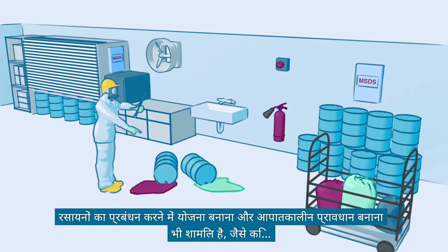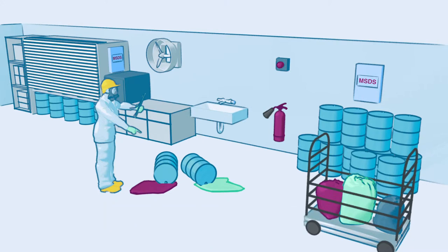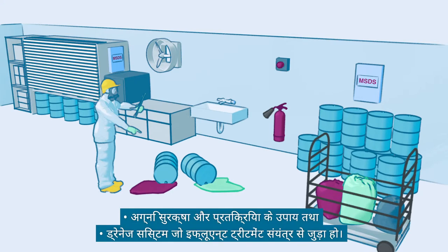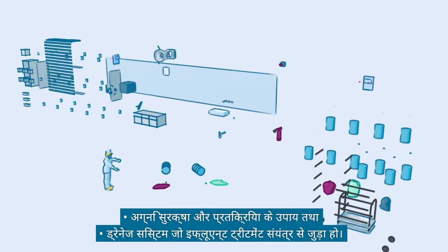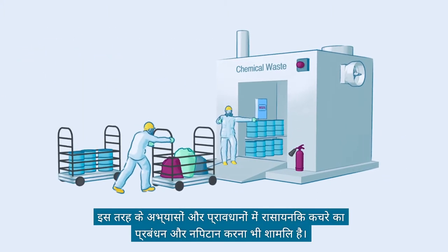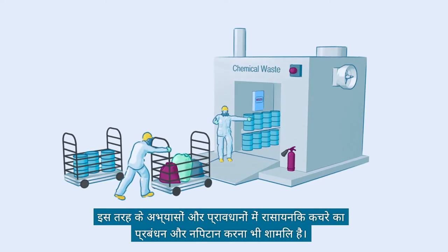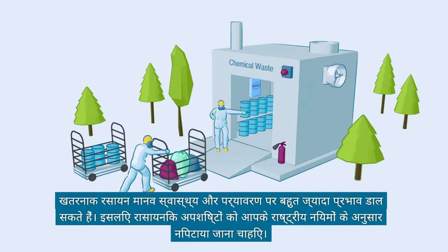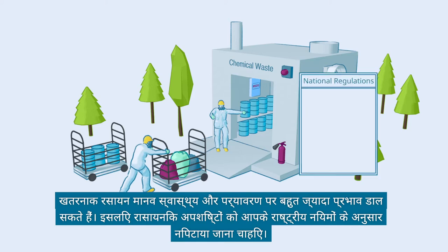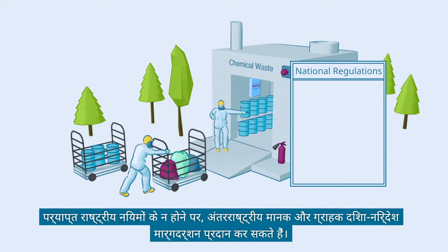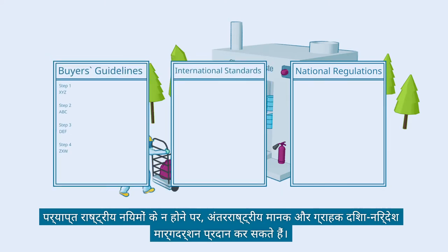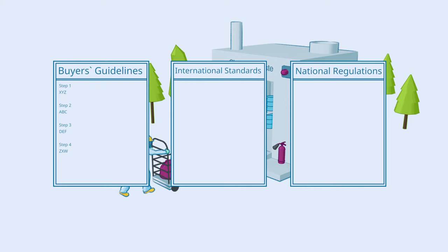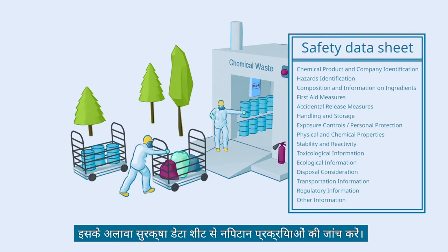Chemicals management also involves planning and making emergency provisions, such as spillage and leak control facilities, fire protection and response measures, and a drainage system connected to the effluent treatment plant. Such practices and provisions also include those for the management and disposal of chemical waste. Hazardous chemicals can have a significant impact on human health and the environment. Therefore, chemical waste needs to be disposed of according to your national regulations. In the absence of adequate national regulations, international standards and buyer's guidelines can provide guidance. Also, check the disposal procedures from the safety data sheets.